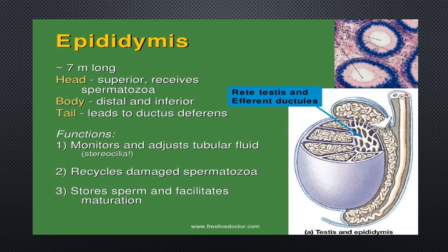The epididymis is a structure associated with the testes, approximately 7 meters long. The head is superior and receives spermatozoa; the body is distal and inferior; and the tail leads to the ductus deferens. Its functions include monitoring and adjusting tubular fluid, recycling damaged spermatozoa, storing sperm, and facilitating sperm maturation. Mature sperm capable of fertilization are produced in the epididymis, which then leads to the ejaculatory ducts.